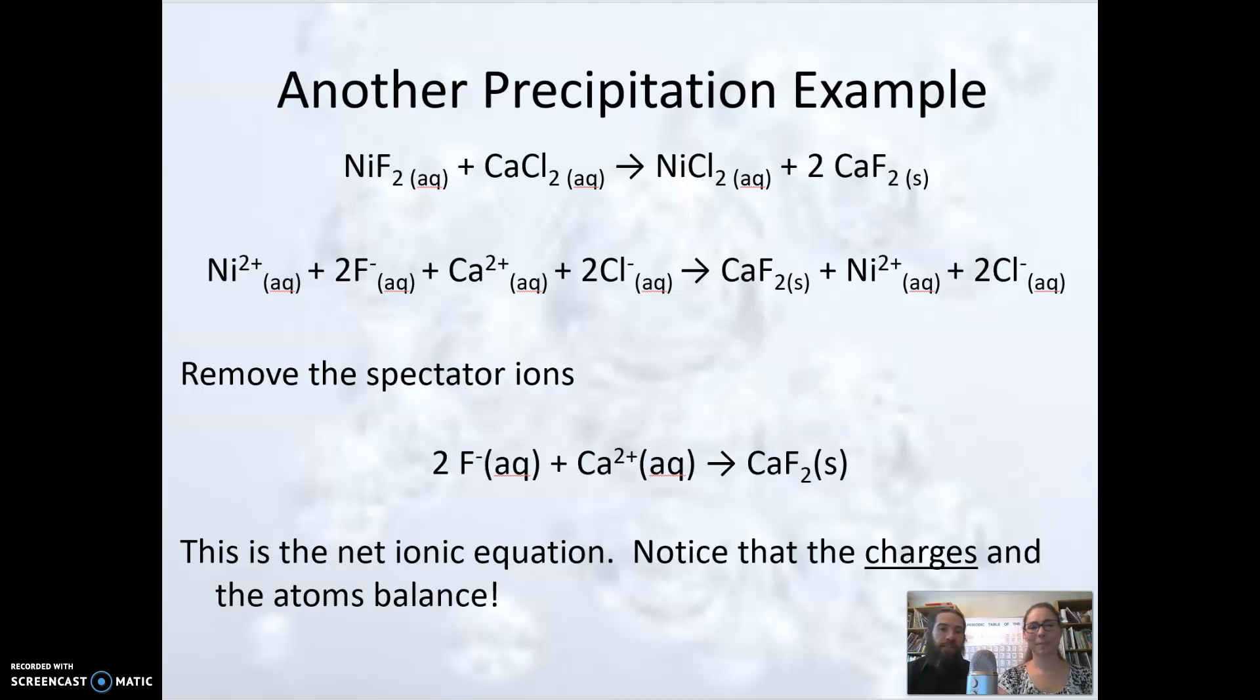So here's an example. This is a double displacement precipitation reaction. We formed a solid, that calcium fluoride, and I'm going to just look for my electrolytes, my strong electrolytes, and I'm going to break those apart into ions. So nickel fluoride is a soluble ionic compound. That is a strong electrolyte. So I break that apart into ions. Calcium chloride is the same. That's a soluble ionic compound. So we'll break that apart.